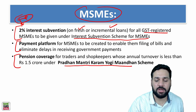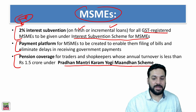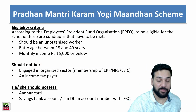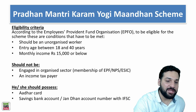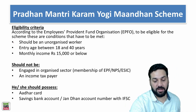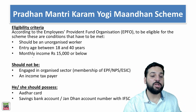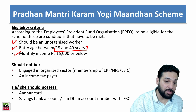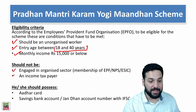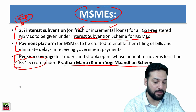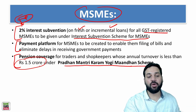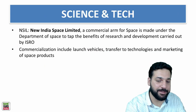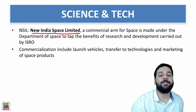On pension coverage, the Pradhan Mantri Karam Yogi Mandhan scheme will now cover traders and shopkeepers with annual turnover up to 1.5 crore. Previously, unorganized workers aged 18 to 40 with monthly income below 50,000, who were not in the organized sector, not income taxpayers, and had an Aadhaar card and savings bank account, were eligible. Now traders with turnover less than 1.5 crore are also eligible.